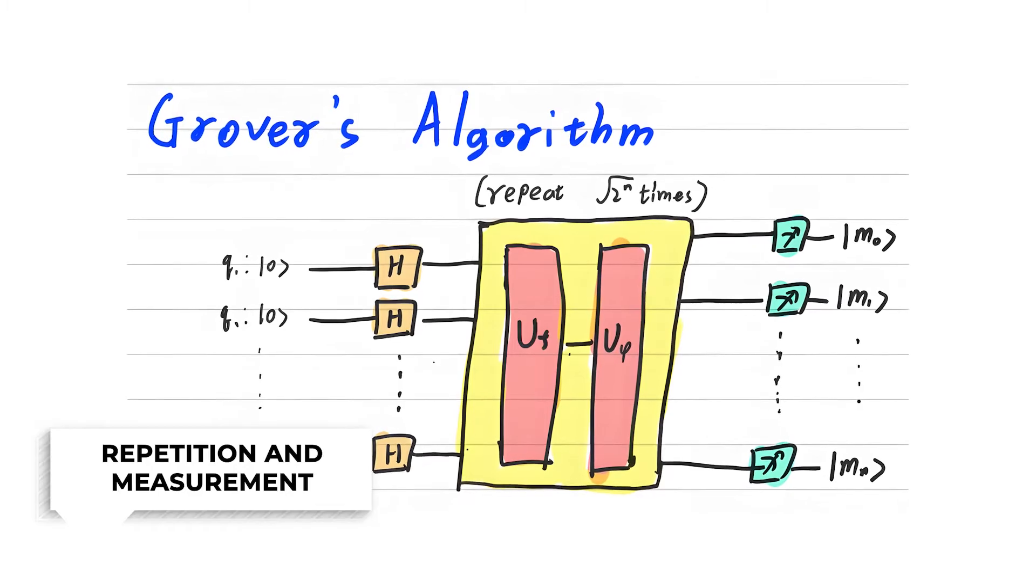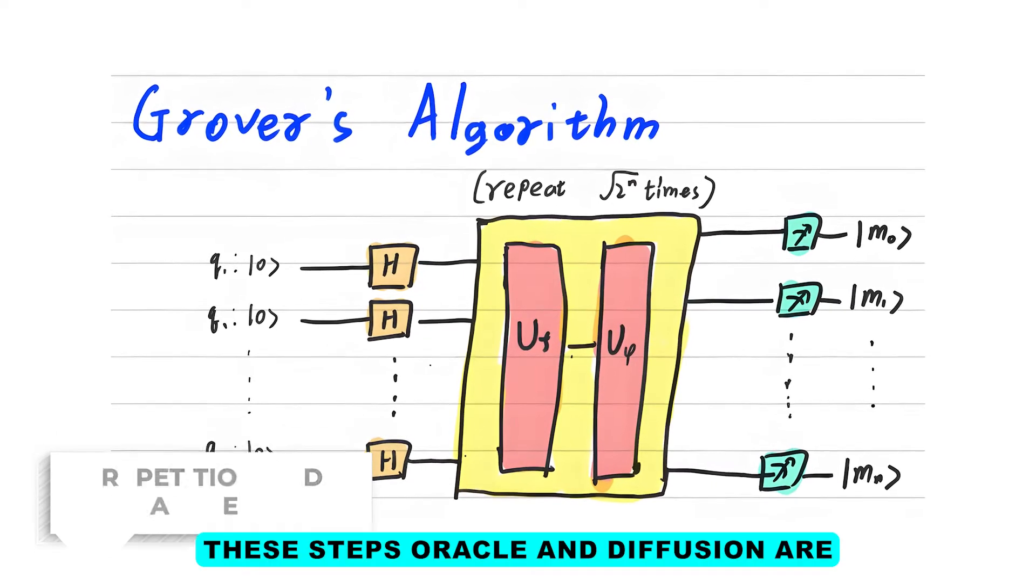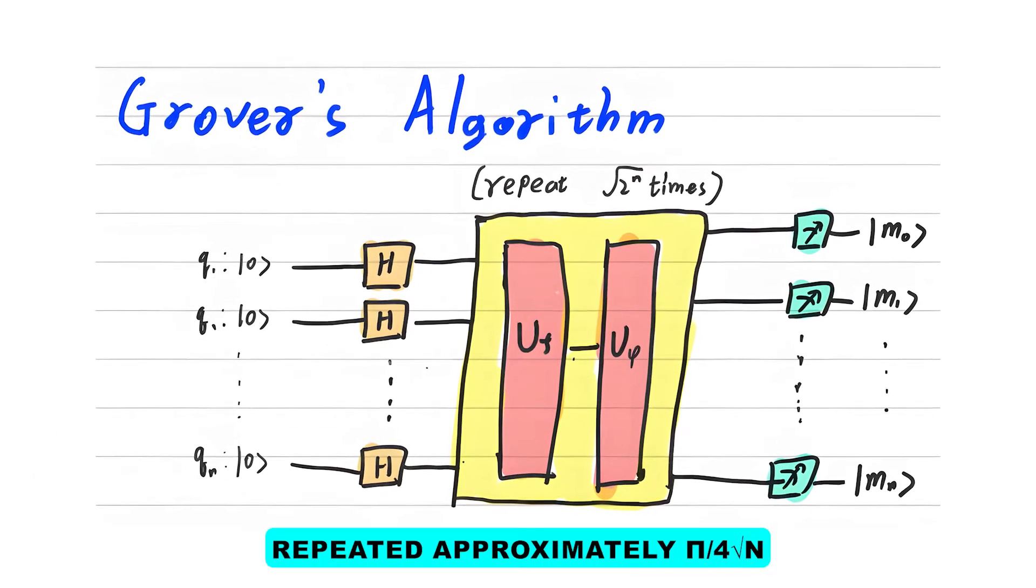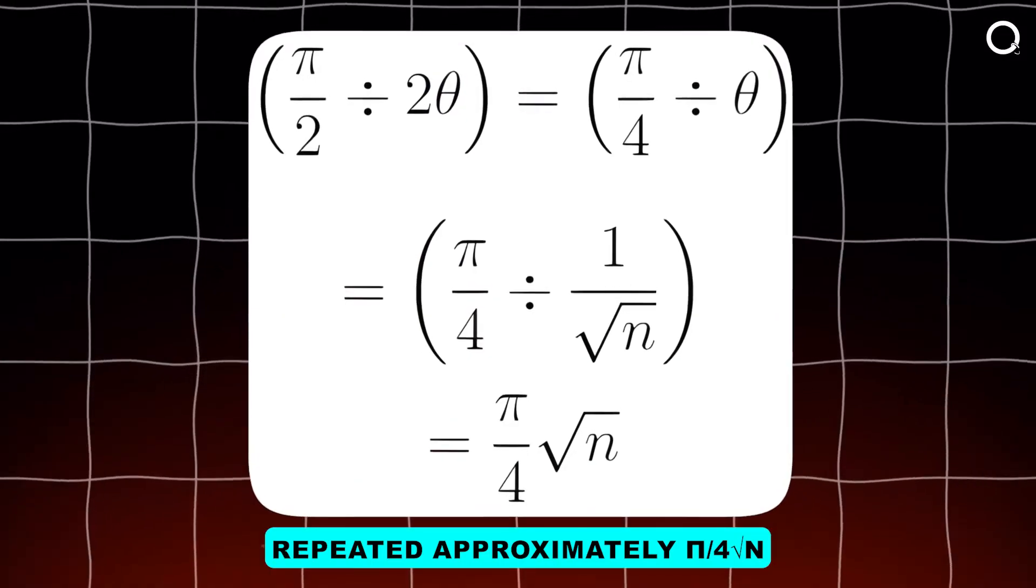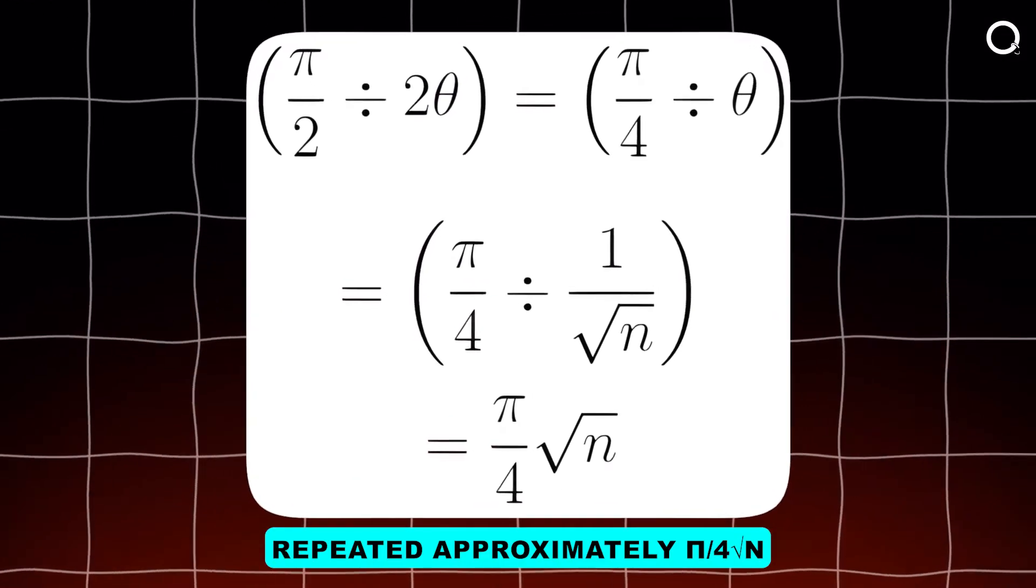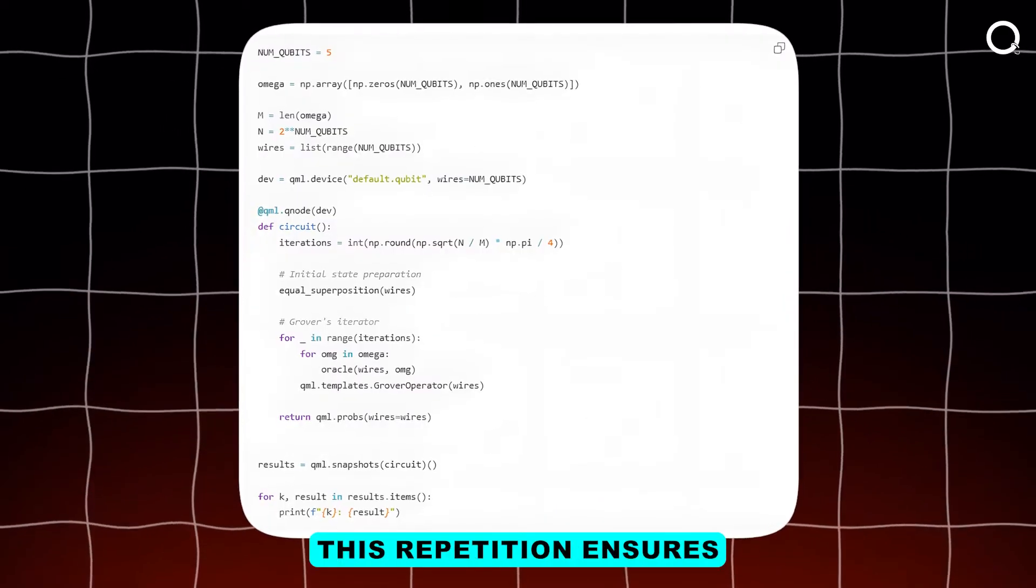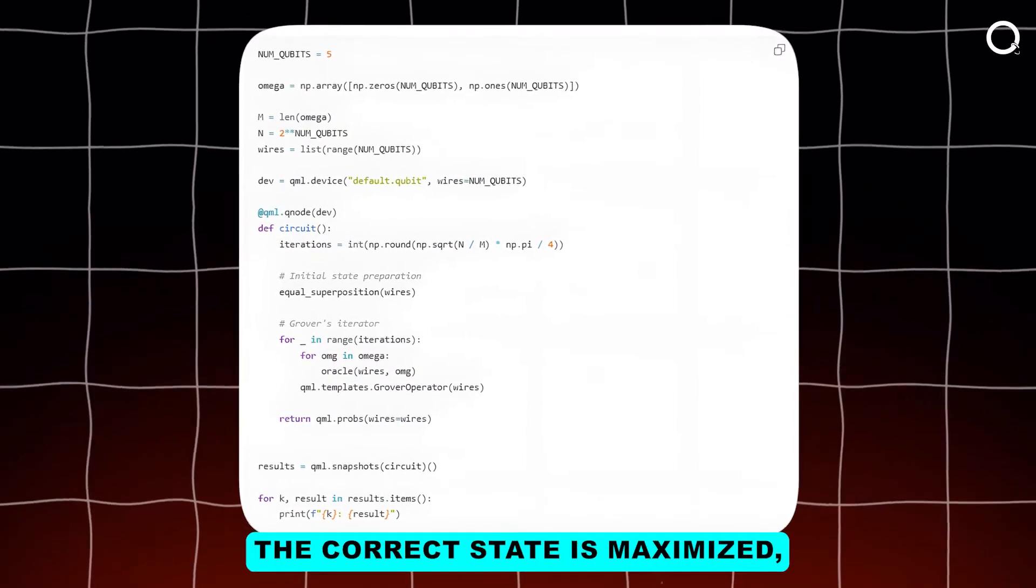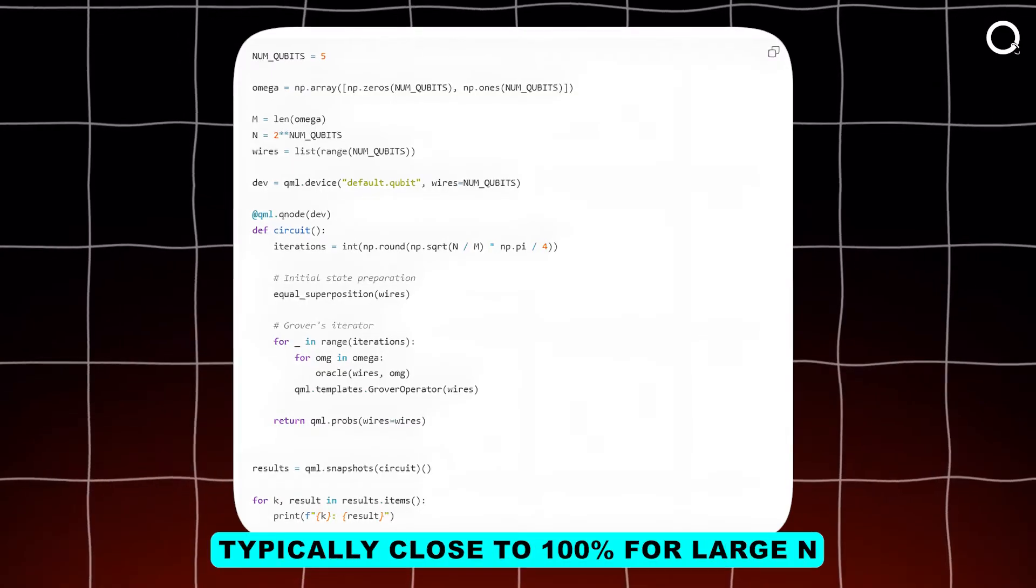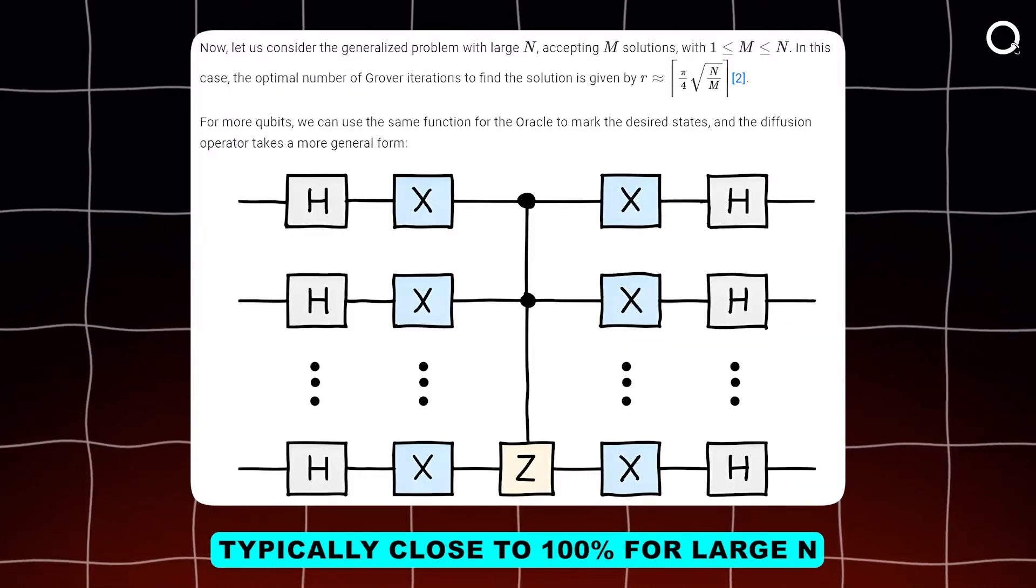Number four: repetition and measurement. These steps—oracle and diffusion—are repeated approximately pi divided by 4 times the square root of N times, after which the quantum state is measured. This repetition ensures that the probability of measuring the correct state is maximized, typically close to 100% for large N.